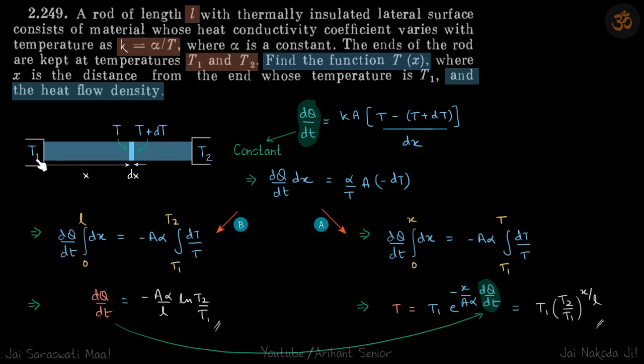We have a rod between temperatures T1 and T2, and heat conductivity is not constant—it's alpha by T. We need to find temperature as a function of x and what should be the heat flow density.